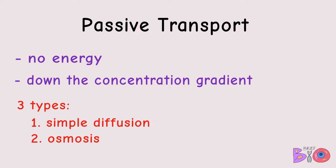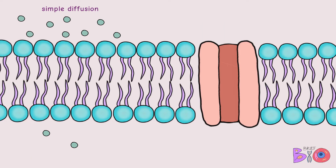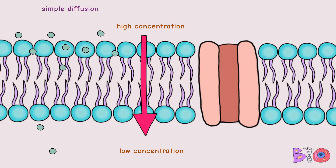There are three types of passive transport: simple diffusion, osmosis, and facilitated diffusion. Simple diffusion is the transport of smaller molecules like oxygen or carbon dioxide directly through the cell membrane. These molecules travel from a high concentration at the top to a low concentration at the bottom.